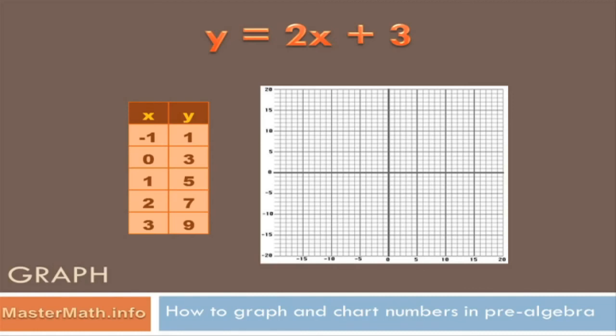Well the first one is minus 1 and 1. So we'd find minus 1 on the x axis. Let's see that would be right about there. There's minus 1. And then we find positive 1 on the y axis. It would be right about there. So I'm going to put a dot right there.